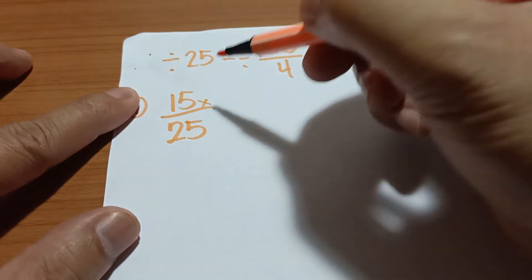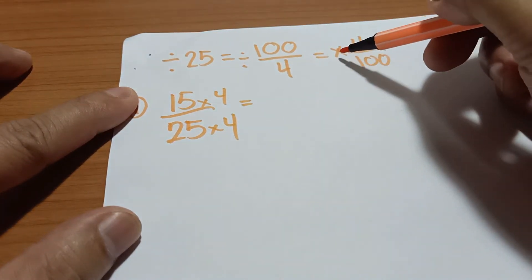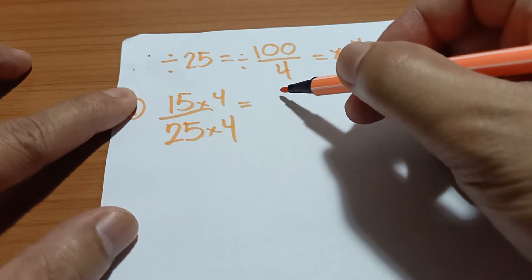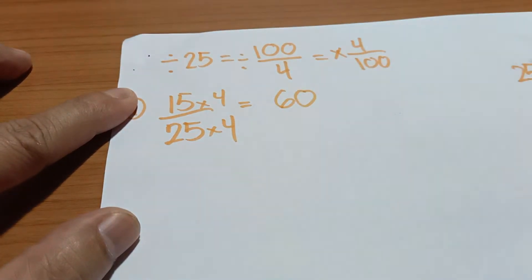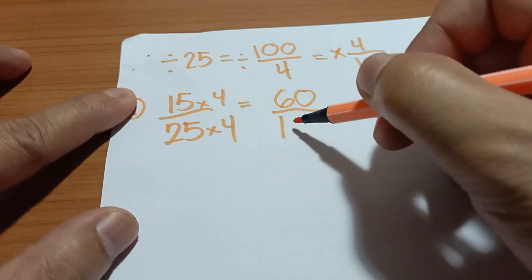That's why it's multiplied by 4 over 100. So 15 times 4 is 60, and then 25 times 4 is 100.